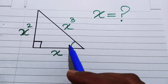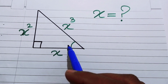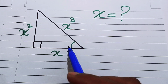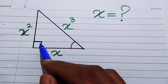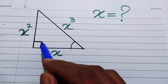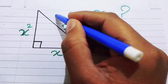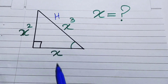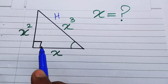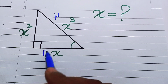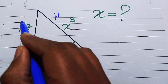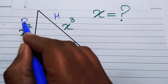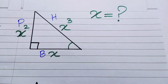We know that one angle is 90°. In a right triangle, the side opposite to the right angle is known as the hypotenuse, the side joining the two angles is known as the base, and the third side is called the perpendicular or altitude.